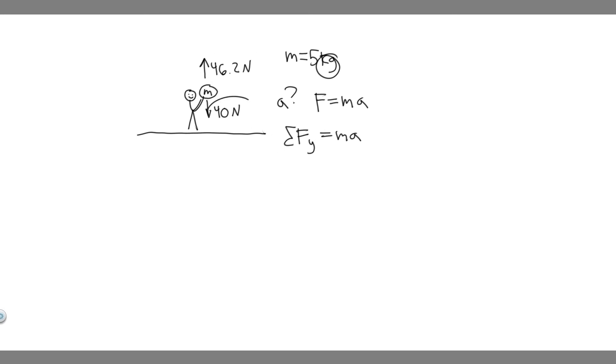In this case, it's going to be 46.2 and 40. So we got to add them up. So we're just going to say ma equals the forces. So basically, when a force goes up, we label it positive. And when a force goes down, it's negative. So what we want to do is add them up.